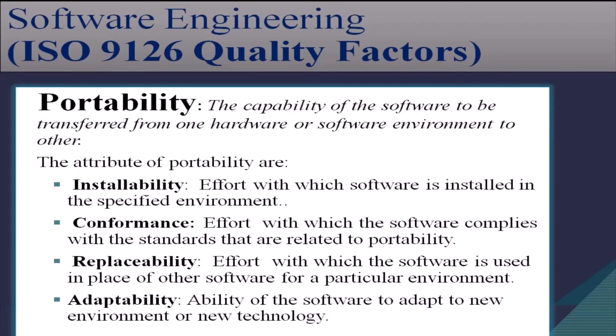The next factor is portability. Portability is the capability of the software to be transferred from one hardware or software environment to another. The attributes of portability are installability, conformance, replaceability, and adaptability. Installability means the effort with which the software is installed in a specified environment. Conformance means the effort with which the software complies with standards related to portability. Replaceability means the effort with which the software is used in place of other software for a particular environment. Adaptability means ability of the software to adapt to a new environment or new technology. This is all about the factors of ISO 9126.